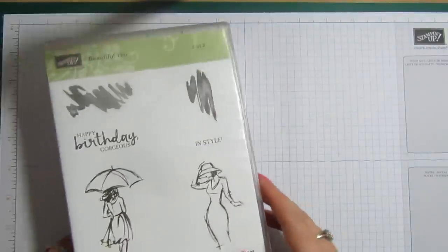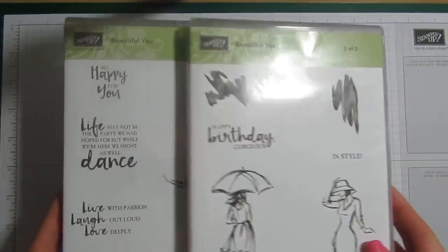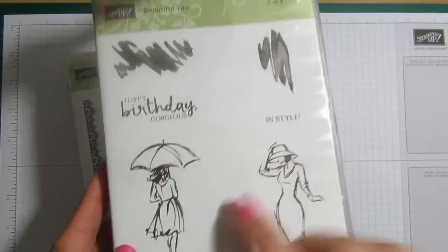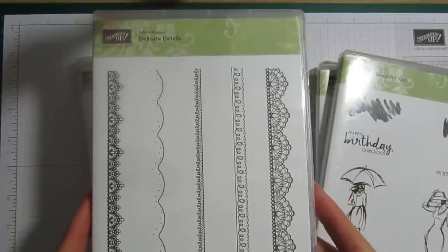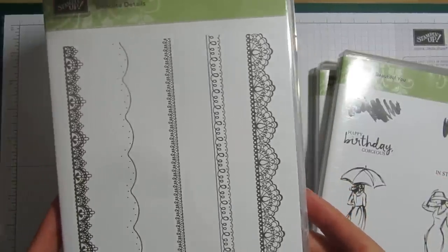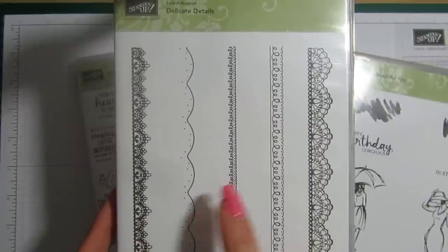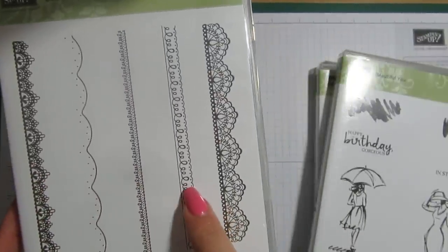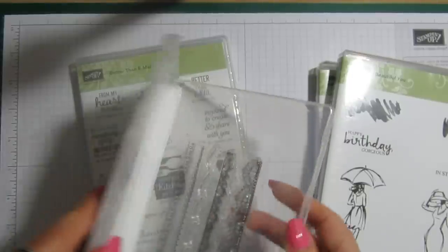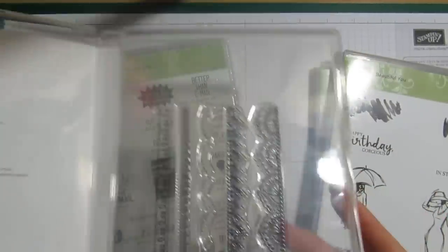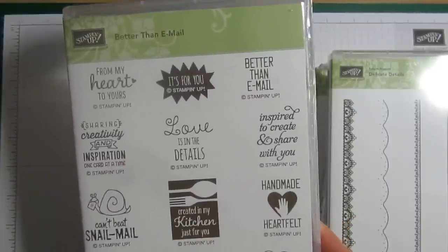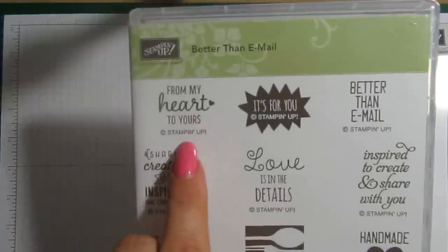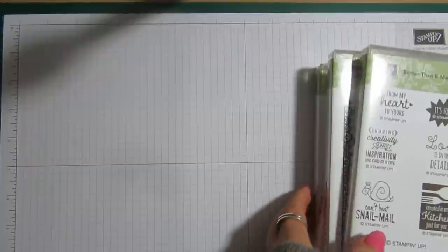So what we're using is Beautiful You, you get two cases with this set and I'm going to use the same girl with the umbrella. And that's the free set you can get from Saleabration if you spend £45 and on the books I think I used that one and today we're going to use this one and it's a really beautiful stamp set. And the sentiment I got from Better Than Email which is in the annual catalogue and it was From My Heart to Yours.